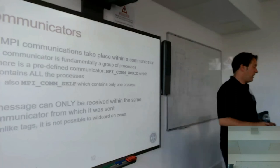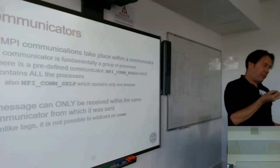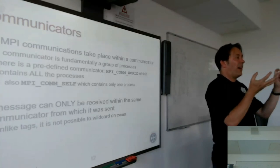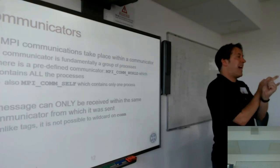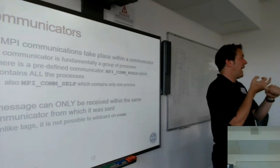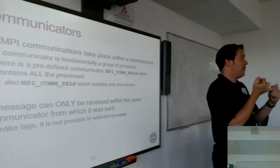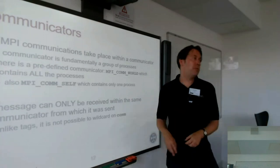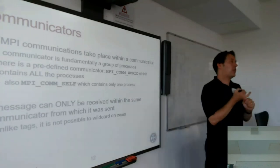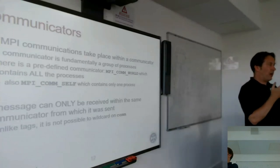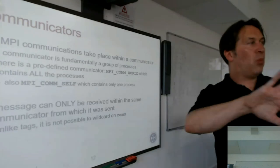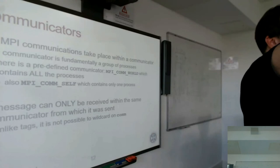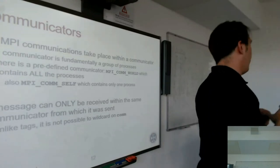A message can only be received within the same communicator from which it was sent, and must be received with the same tag with which it was sent. That looks like double counting — communicators have to match and tags have to match. The important point is: you can't wildcard on the communicator. You can wildcard on the tag. A communicator is a guaranteed way of splitting things — messages sent in one communicator cannot be received by processes in another.